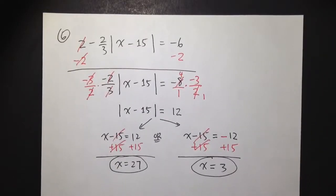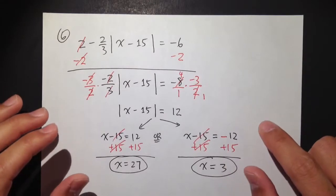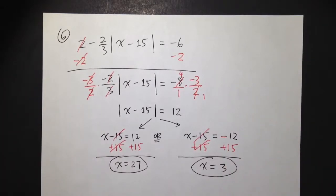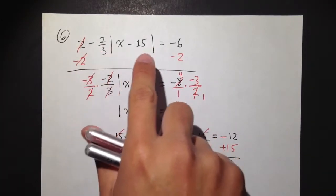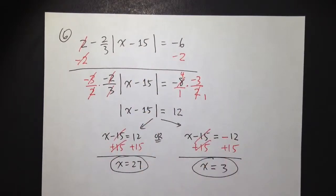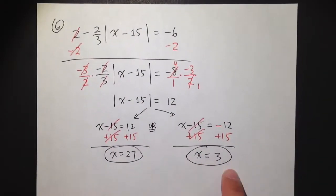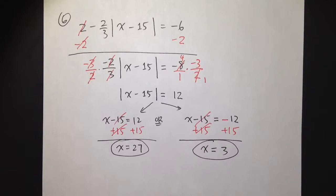And notice that we end up with two answers. And I want to point it out that whenever we are solving absolute value equations, it's likely to have two answers. But we have seen in example number 4 that you can just... I think example number 4. Like in the previous example, that you may just have one answer. That's possible.